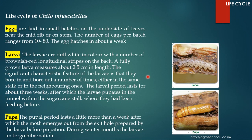Now let's talk about each life cycle stage in detail. Starting with the eggs: they are laid in small batches on the underside of leaves near the midrib or on the stem. The number of eggs per batch ranges from 10 to 80. The egg hatches in about a week.